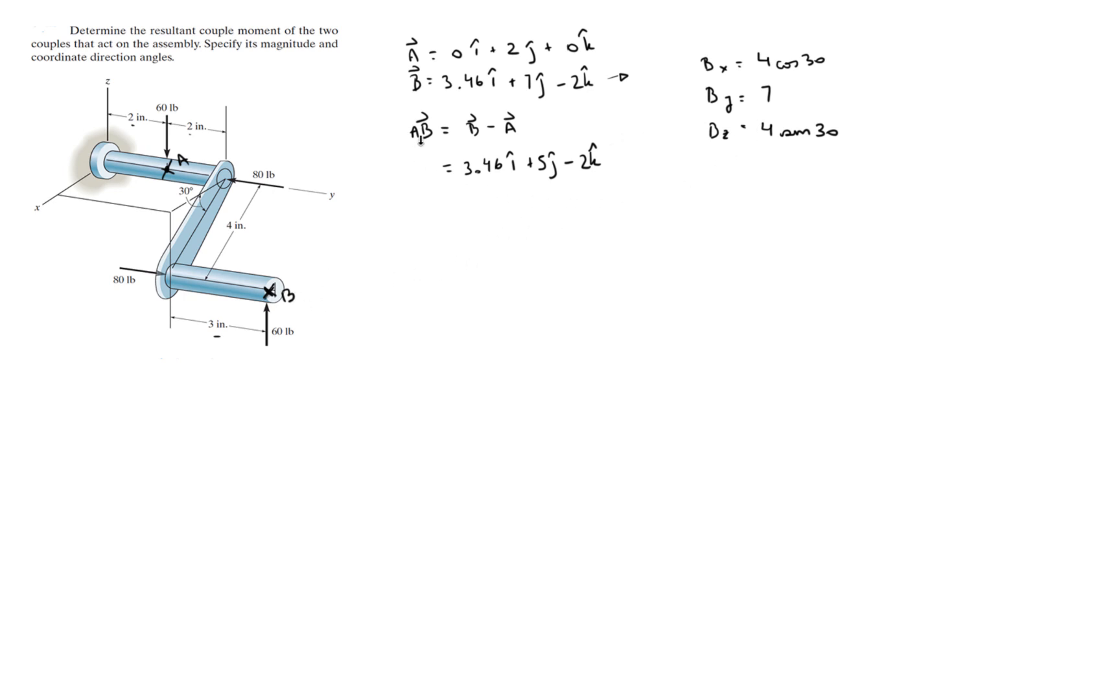So now that we have all the components and the vector that goes from A to B, you can find the magnitude of the moment created by the 60 pound couple moment, which is given by the cross product of AB cross the magnitude of the 60 pound force. We're going to use this one because we're going from A to B.